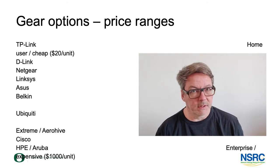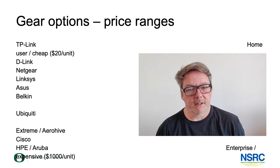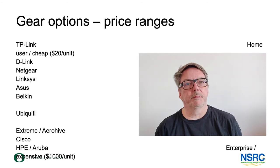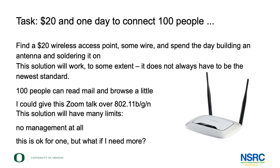The question is: is there a best choice? If somebody gives me $20 and says 'build an access network for 100 people,' I can probably do that. I can build a home access point for $20, add some self-built DIY antennas, and that would enable 100 people to read mail and do some browsing — it won't be super fast, but I could even give a video presentation over that network. Not 100 people simultaneously, but a $20 access point will still do this job. Of course, it's unmanaged at this price.